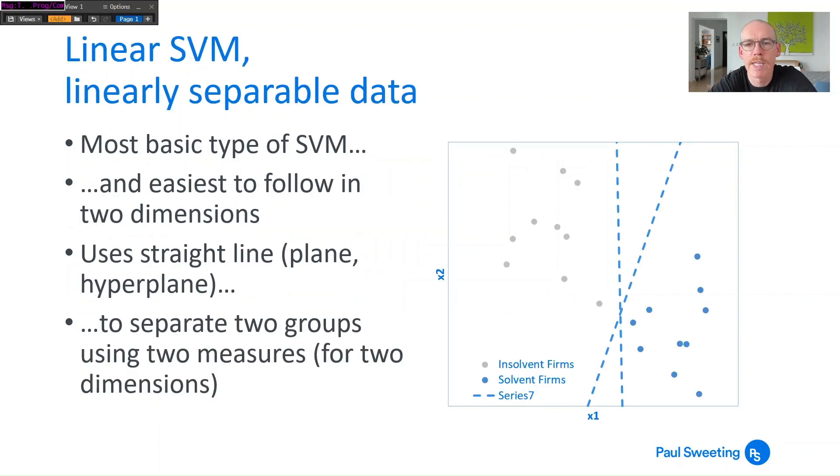So this is the kind of simplest example - we got linearly separable data which means you've got data which can be separated by a line. You're looking at two variables here so you can do it in two dimensions and it just uses a straight line to divide in this case solvent and insolvent firms.